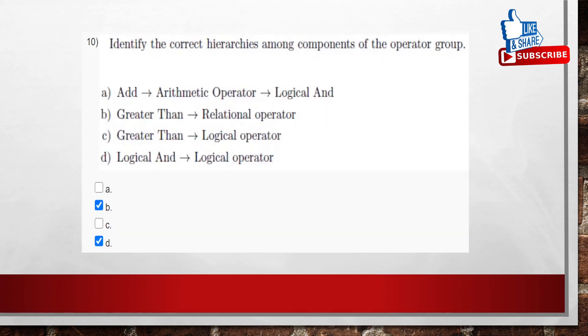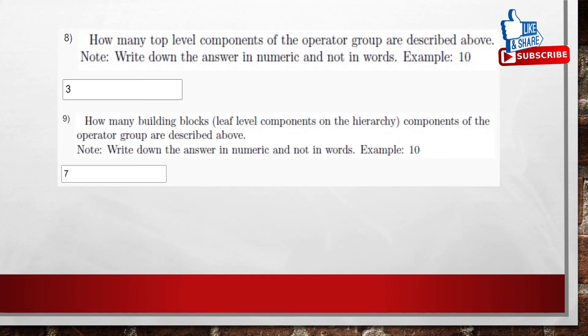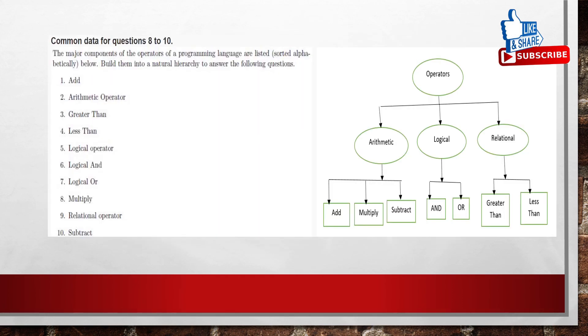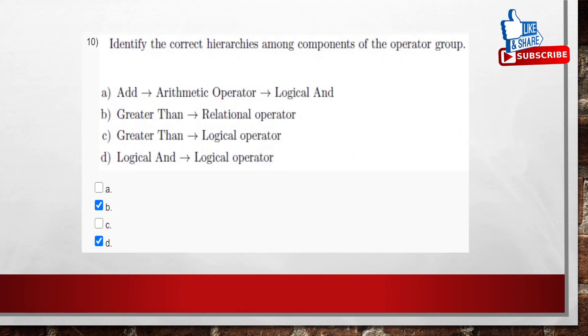Coming to the last question, identify the correct hierarchies among the components of the operator group. So if you see add arithmetic operator, logical and. That is, if you see the hierarchy, that is not there in the hierarchy. Add arithmetic is there. But logical one is not there. Logical and. So greater than relational operator. So greater than is a relational operator, so that is there. Greater than is not a logical operator. So we can't take that hierarchy.